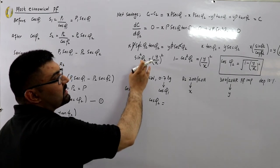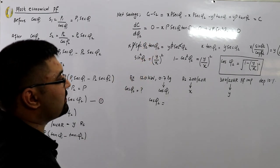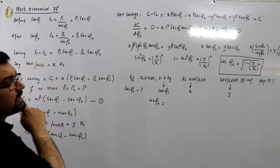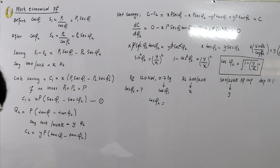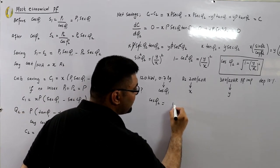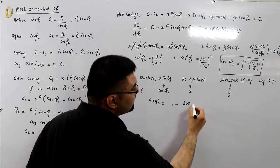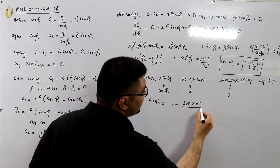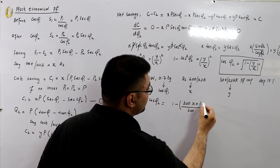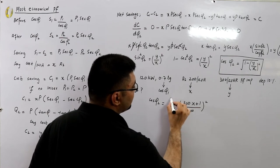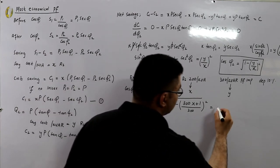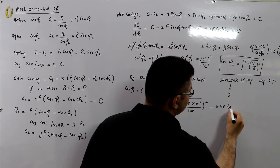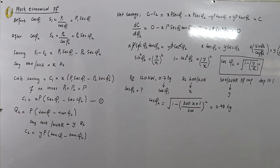The most economical power factor works out to 0.98 lagging. Alternatively, you can find φ2 = sin⁻¹(Y/X) first, then take cos(φ2) to get the power factor — both methods give the same result.